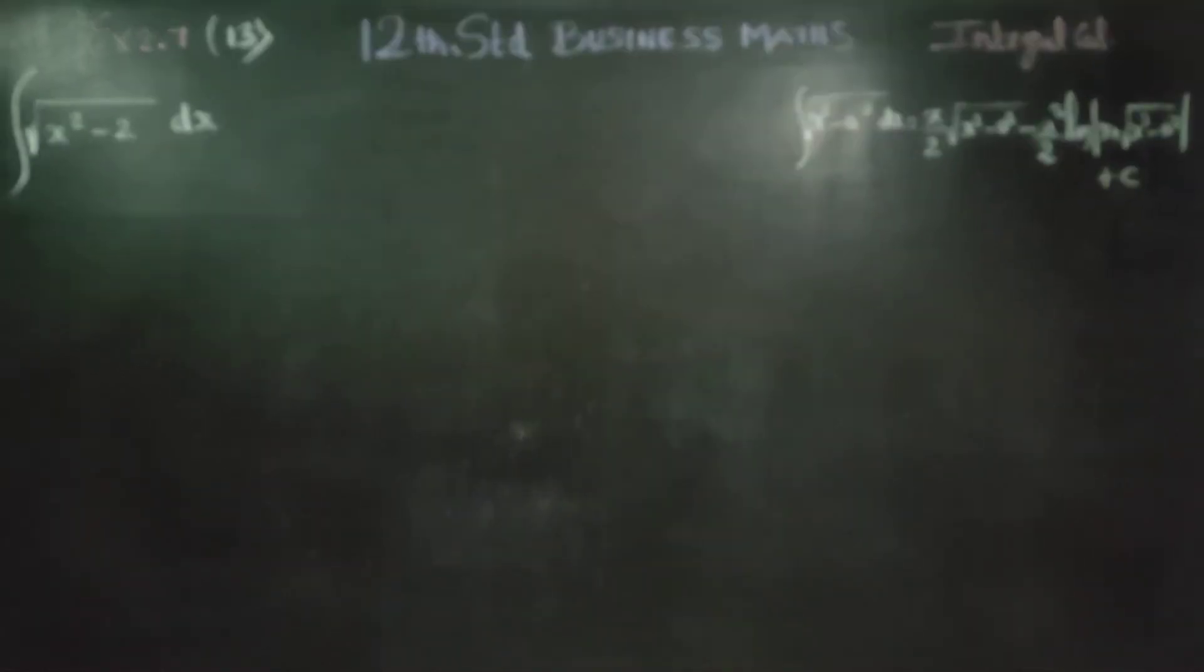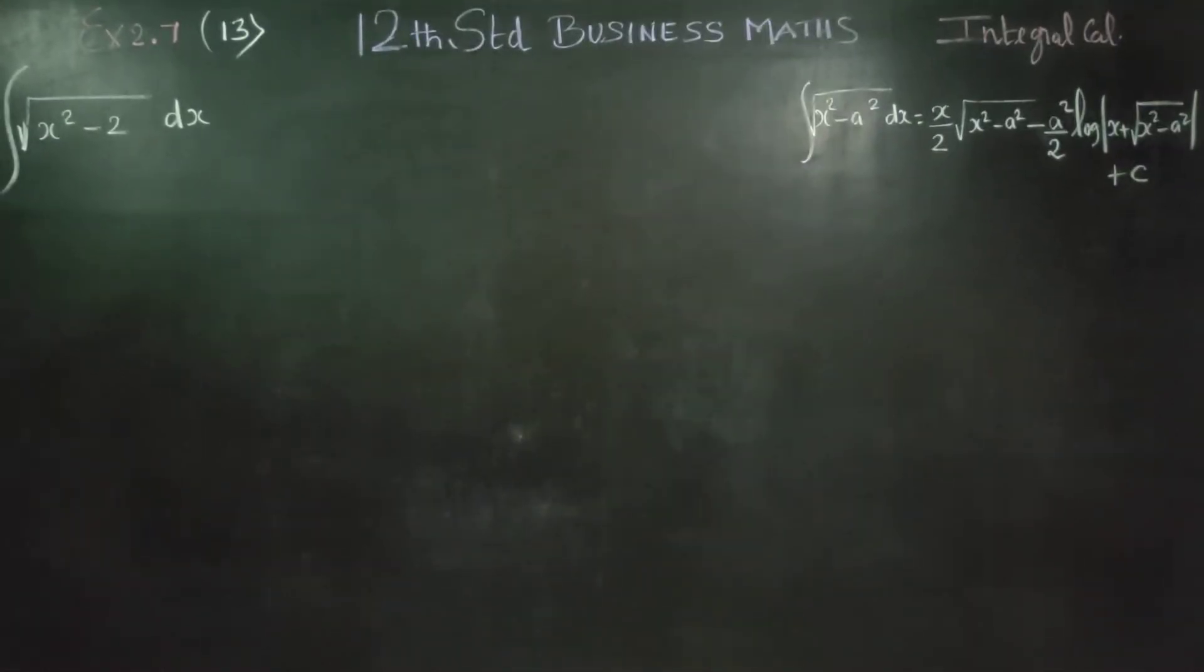Dear Business Math students, I am Metra Karanagaran. In XI's number 2.7, 13th sum, integrate square root of x square minus 2 dx.